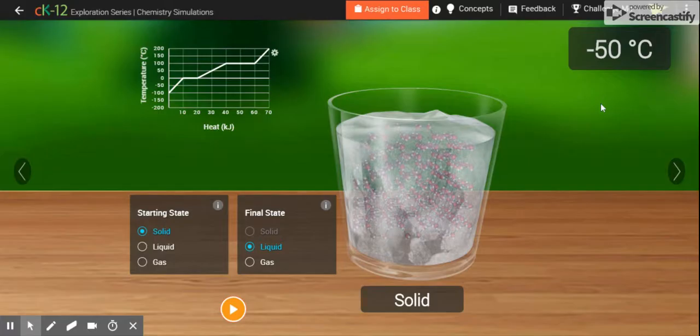Over here on the upper right hand corner tells us the current temperature of our water. So right now a cup of ice is at negative 50 degrees Celsius. And then over here in the upper left hand corner we've got a graph which shows us temperature versus heat. Now the heat we're not really so much interested in, but we are interested in the temperature, especially what it's doing, where is it at in the different phases, and what happens to that temperature as we go in and out of those phase changes.